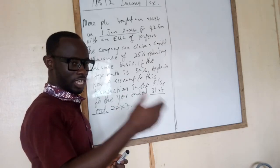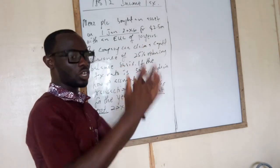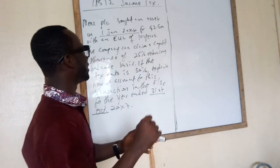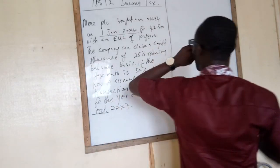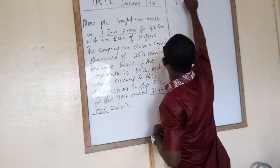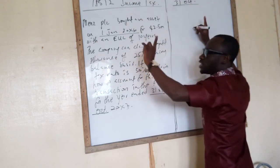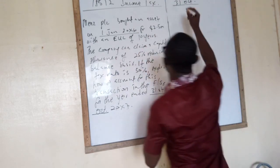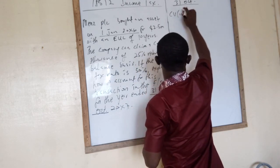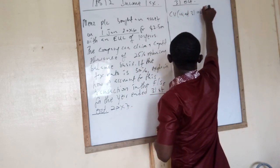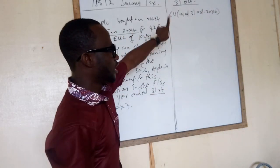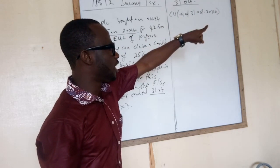The movement will be in 20X. So first, what do we do? The year end of the company is 31st October. So first, we need to find out the current value of the asset as at 31st October 20X. Carrying value as at 31st October 20X.